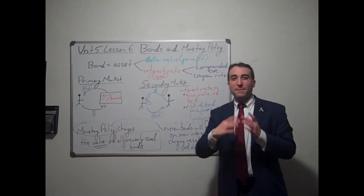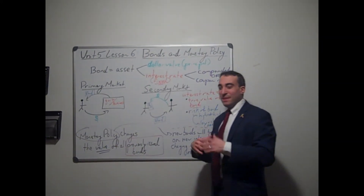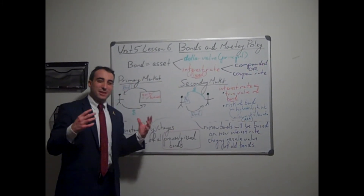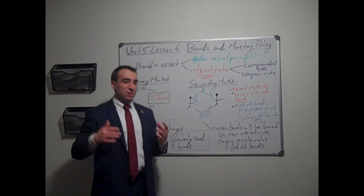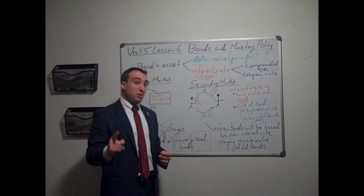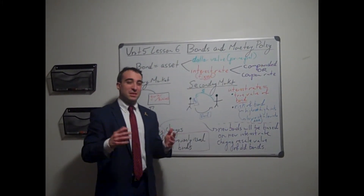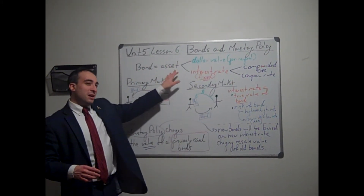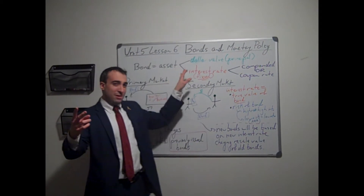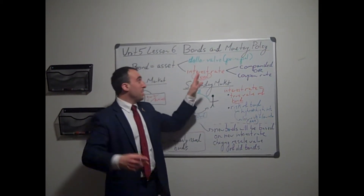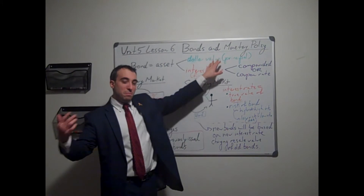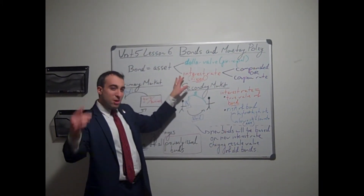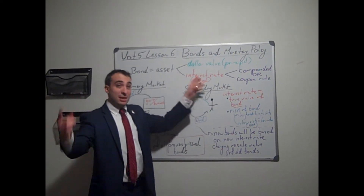We have two parts to this lesson. First, we're going to take a look at bonds as a financial asset. As investor Warren Buffett says, bonds will not create wealth, but they will preserve wealth, and they should be a part of every person's financial portfolio. A bond is an asset composed of two parts that derive its value: the actual dollar value — the principal amount — and its interest rate.